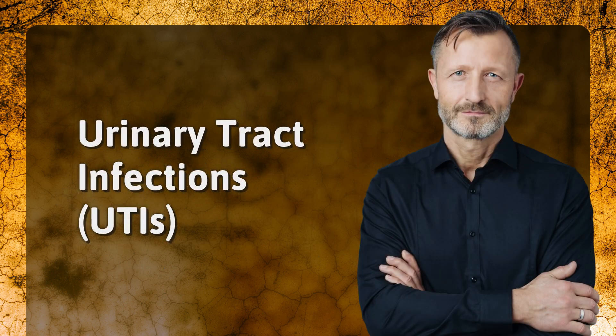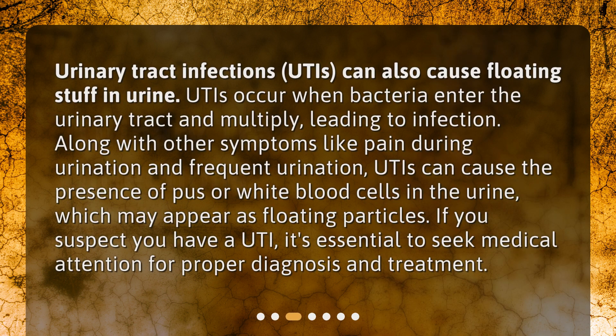Urinary Tract Infections, or UTIs, can also cause floating stuff in urine. UTIs occur when bacteria enter the urinary tract and multiply, leading to infection. Along with other symptoms like pain during urination and frequent urination, UTIs can cause the presence of pus or white blood cells in the urine, which may appear as floating particles. If you suspect you have a UTI, it's essential to seek medical attention for proper diagnosis and treatment.